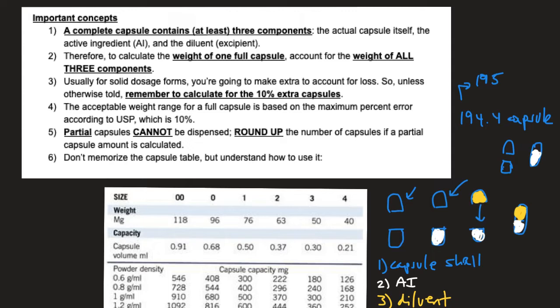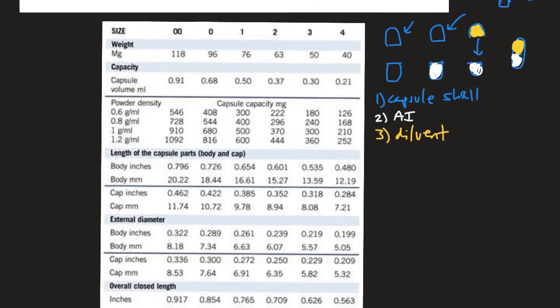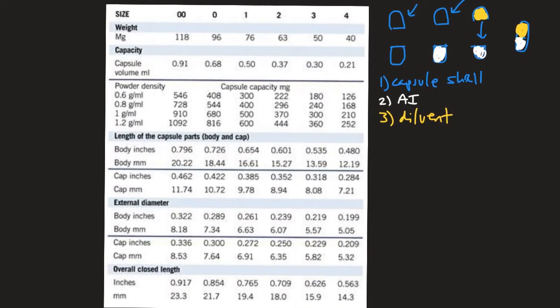Important concept number six: don't memorize the capsule table, but understand how to use it. Here's the capsule table you'll see in lab. You have the size of the capsule, the weight of the corresponding capsule size — so a size 00 capsule would weigh 118mg — and a volume of 0.91mL. Then there are the powder densities, from which you can decide which capsule size to use. For example, if my powder has a density of 0.6 g/mL and my AI is about 250mg, I can determine which capsule capacity fits.